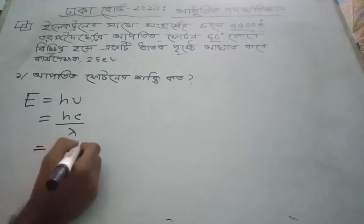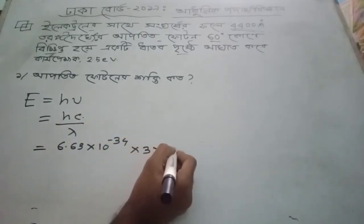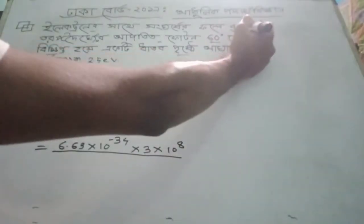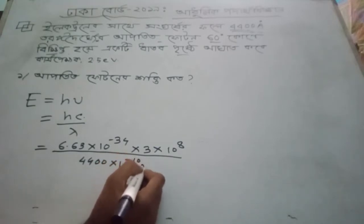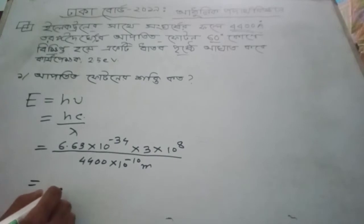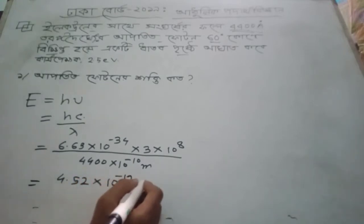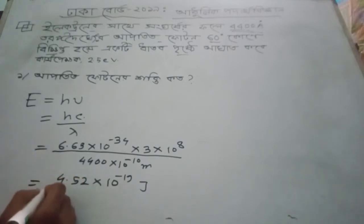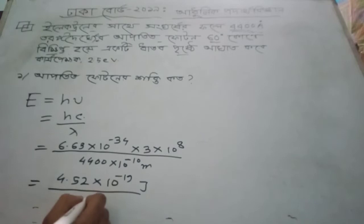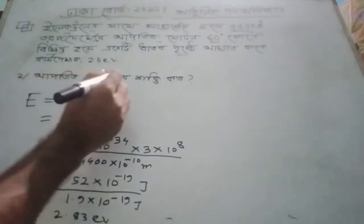6.63 into 10 to the power negative 34, into the value of c which is 3 into 10 to the power 8, divided by lambda value. Another value: 5.63 into 10 to the power negative 10 meters. Calculating lambda value: 4.52 into 10 to the power negative 19. Southwest: 8.63 into 10 to the power negative 9. Result: 1.63 into 10 to the power negative 7.